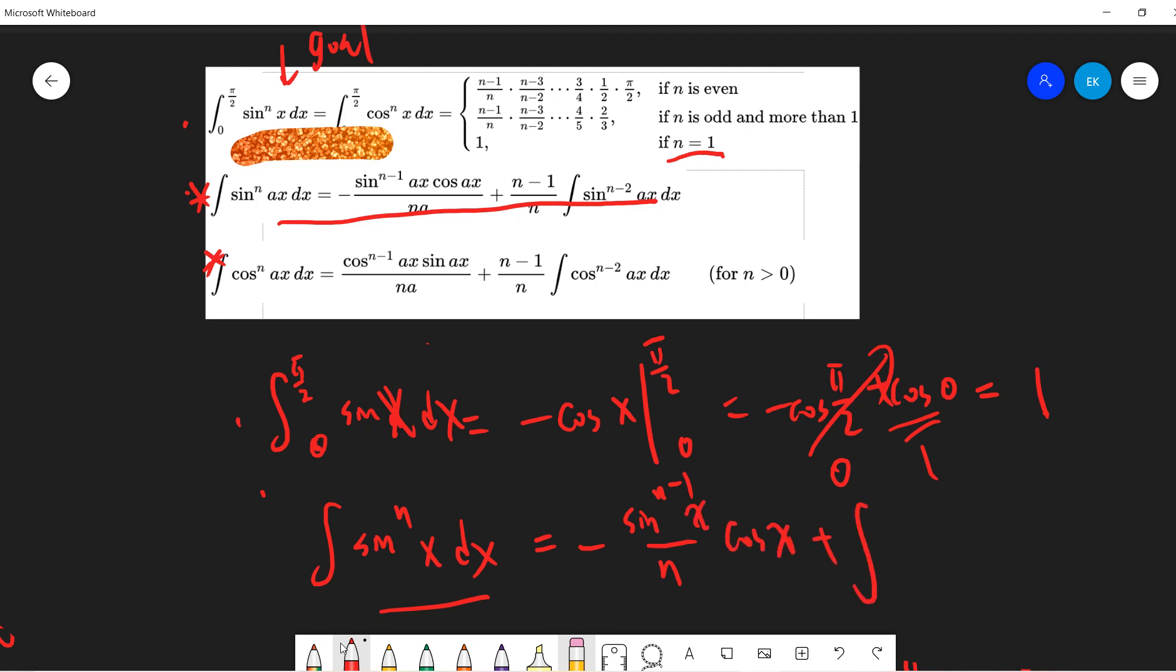For this one, it's also pi over 2 to 0, and then sine n minus 2 x dx, so n minus 1.